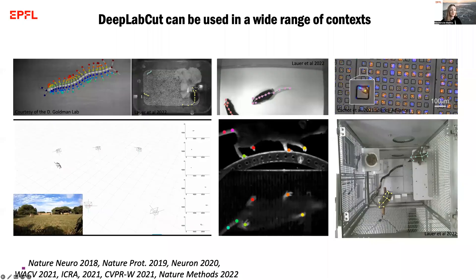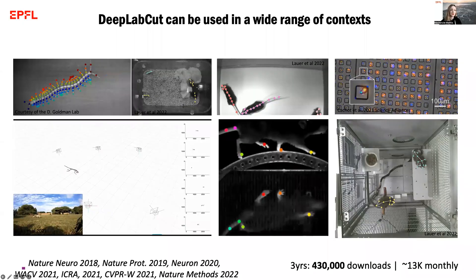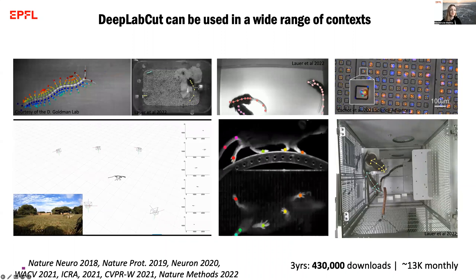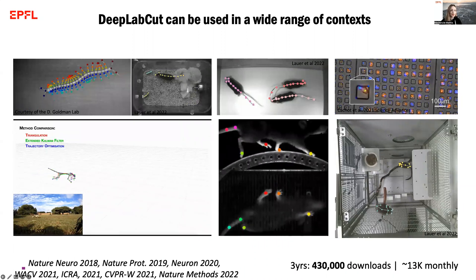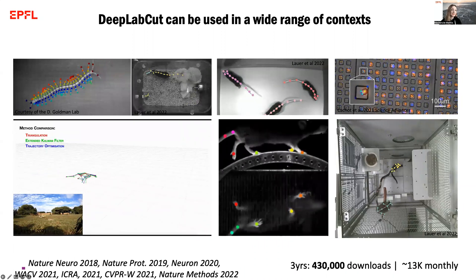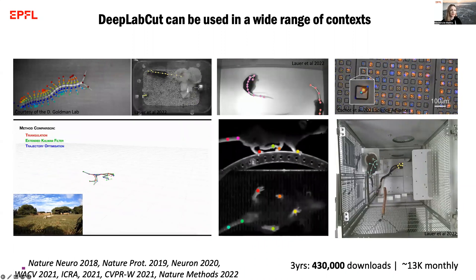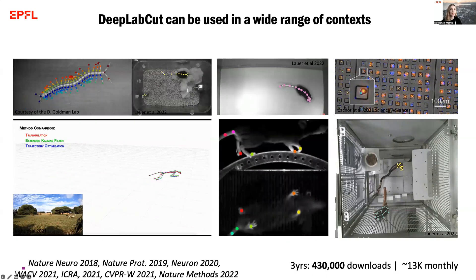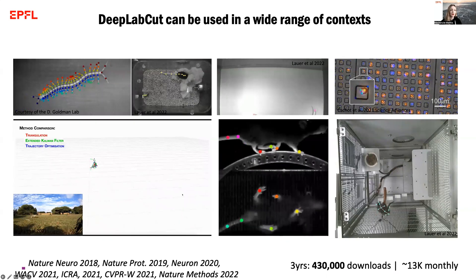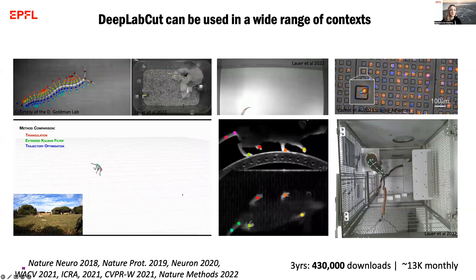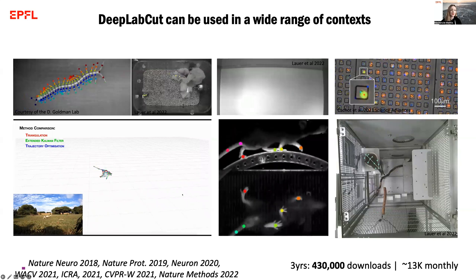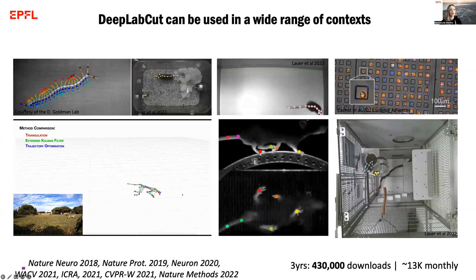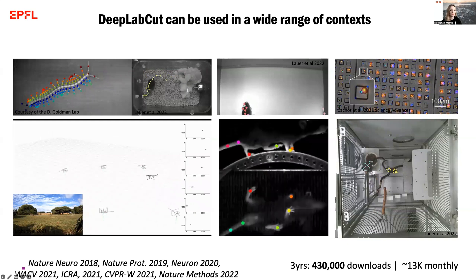As you might know, DeepLabCut has been used in a wide range of contexts, from centipedes to mouse parenting, to trail tracking, to cell cancer biology, to social behaviors in marmosets, and even 3D cheetahs on the safari. DeepLabCut has been used in a plethora of downstream applications to track the pose of these animals.